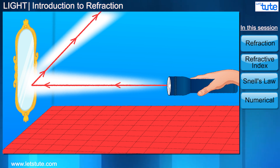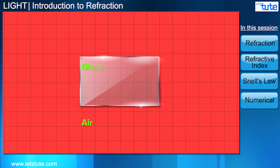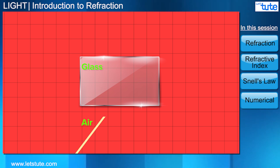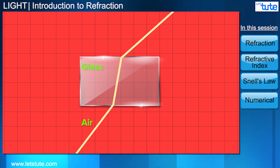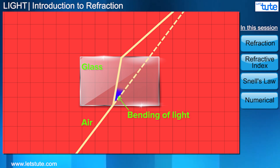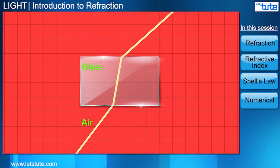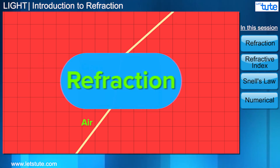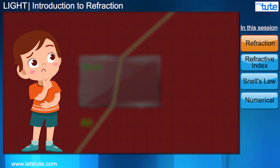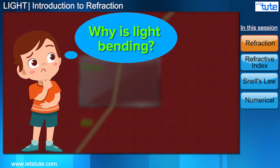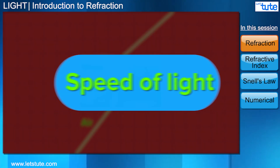But sometimes when the light goes from one material to another, it bends and starts moving in a new direction. This bending of light is called refraction. Now you may be asking: but why is light bending?